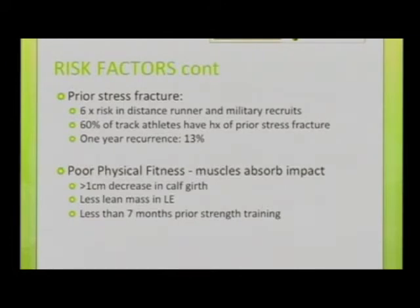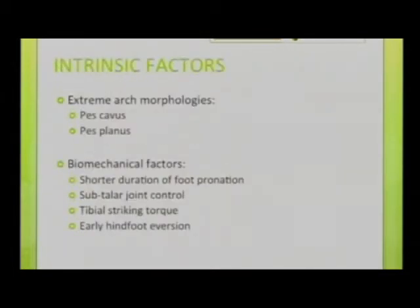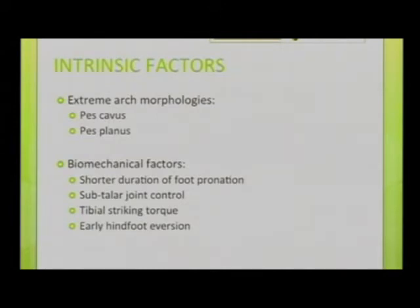If the calf girth is less than 1 centimeter and lean mass in the lower limb is less, the possibility of stress fracture is greater in those not maintaining good exercise. Intrinsic factors include arch morphologies like pes cavus or pes planus, bony prominences where load is transferred to the forefoot, and biomechanical factors such as shorter duration of pronation, subtalar joint control, tibial striking, torque, and early hindfoot eversion.